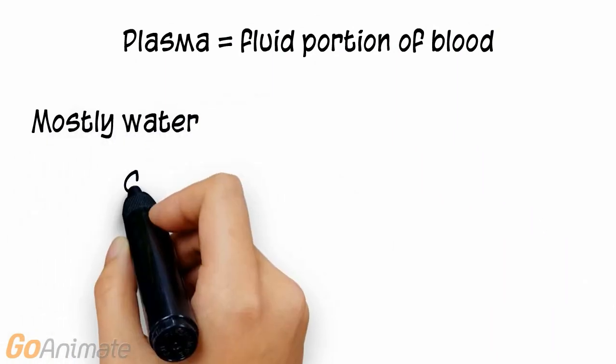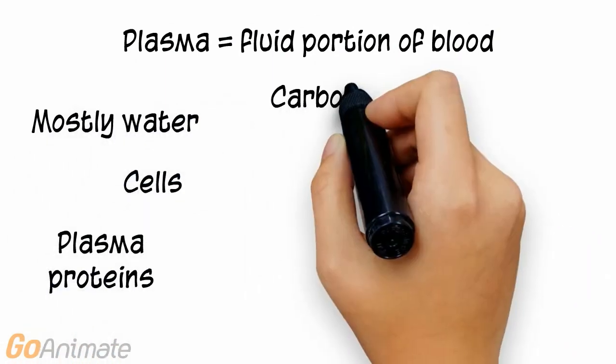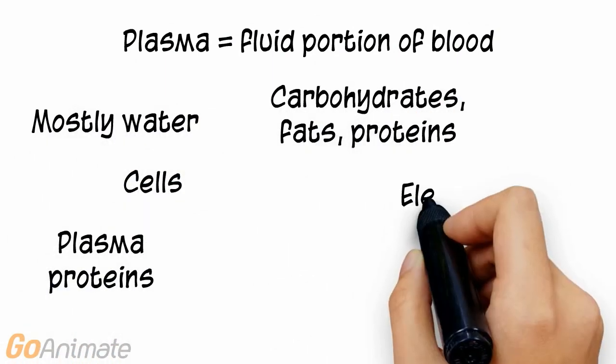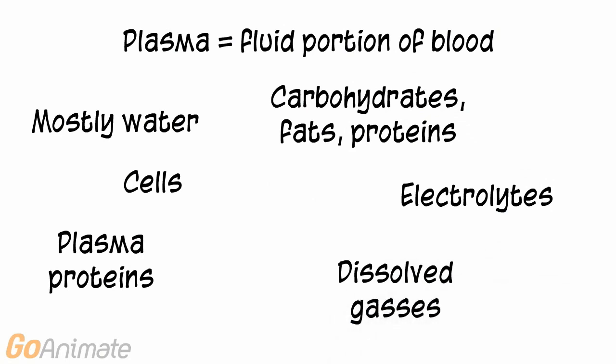Plasma is mostly water and contains a lot of substances. These include cells, plasma proteins, carbohydrates, fats and proteins, electrolytes, and dissolved gases such as carbon dioxide and oxygen.